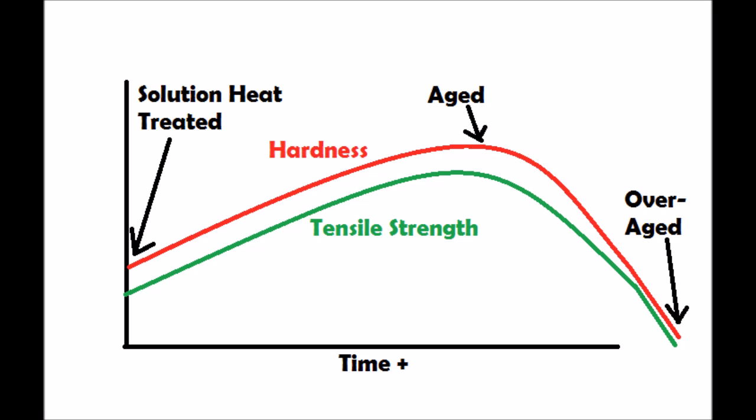After solution heat treatment, during the precipitation hardening process, the tensile strength and hardness are aged to a certain point, and after that point, if the process isn't stopped, they will become overaged.